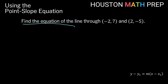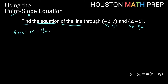Looking at our next one: find the equation of the line — that's definitely telling us our go-to is probably the point-slope equation — through negative 2 comma 7 and 2 comma negative 5. Now you'll notice what we have here is two points, so we have an x1 y1 and an x2 y2. We don't actually have everything we need immediately to use the point-slope equation — we definitely have a point but we don't have a slope. What we can do is use two points to get a slope. Remember that slope m equals y2 minus y1 over x2 minus x1, and we'll plug these in to get our slope, then we'll be able to use the point-slope equation.